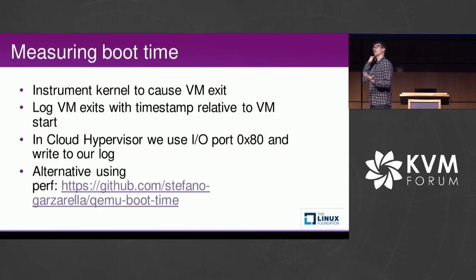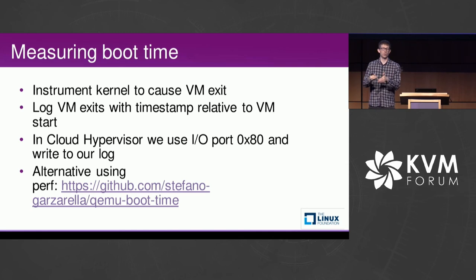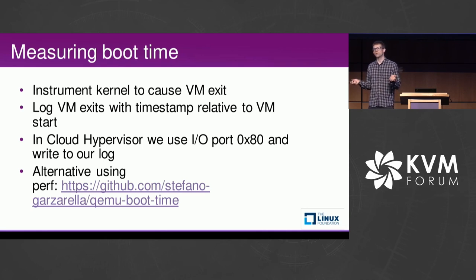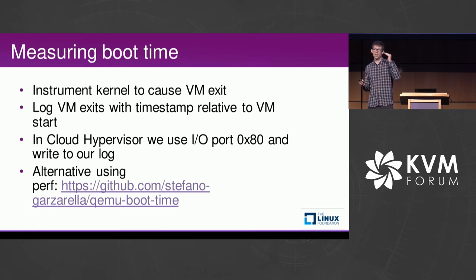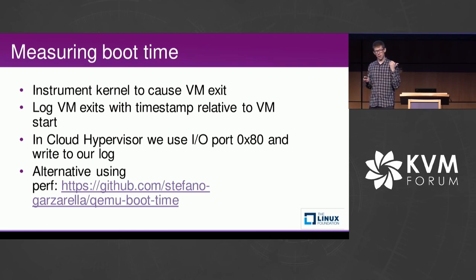How do I measure that time? The easiest way was to instrument the kernel, since we're running our own custom kernel. We trigger a VM exit — one of the easiest ways is to write to the IO port. We use the XLA debug port, and inside Cloud Hypervisor we catch that and trigger a log event at that point in time. It's very easy to measure because our logging starts from the very start of the VMM. You can also use KVM probing to track the actual PIO exit and get a timestamp from there as well.